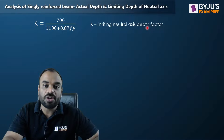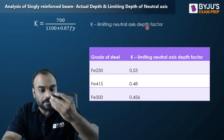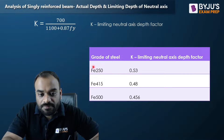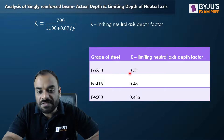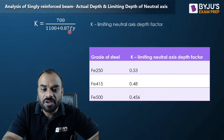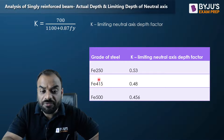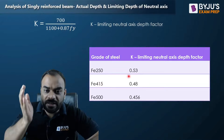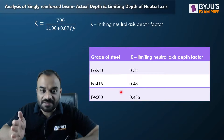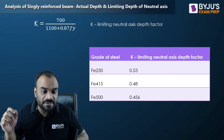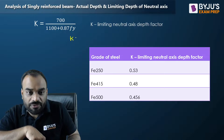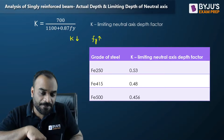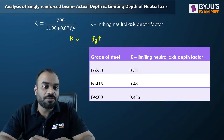The limiting neutral axis depth factor K changes with the grade of steel. For FE 250, K equals 0.53. For FE 415, K equals 0.48. For FE 500, K equals 0.456. As we increase the grade of steel, the limiting neutral axis depth factor decreases — meaning K is inversely proportional to FY. If FY increases, this factor reduces.